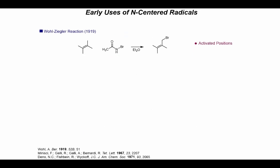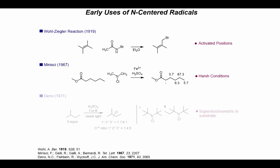The use of nitrogen-centered radicals in CH functionalization dates back to the 1910s. The Wohl-Ziegler reaction uses N-bromoacetamides to functionalize alkanes at activated allylic positions, although this reaction might work just through the slow release of Br2. In the 1960s, Minisci found that N-chloramines in combination with reducing iron salts in sulfuric acid could functionalize methyl hexanoate at the omega-1 position. A couple years later, Deno found that adding steric bulk around these N-chloramines allowed them to preferentially functionalize at the secondary position over the naturally favored tertiary position.